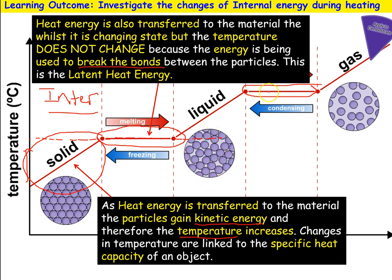You can put more energy in to overcome those intermolecular forces so the molecules can physically move away from each other, giving you the arrangement of a gas. If you're going in the reverse direction — condensing — energy is released because that potential energy is now going somewhere. So going from solid to gas is bond breaking; going from gas to solid is bond forming.